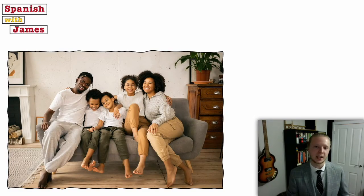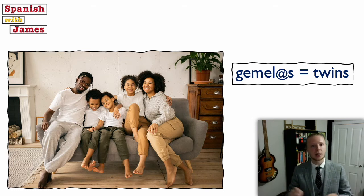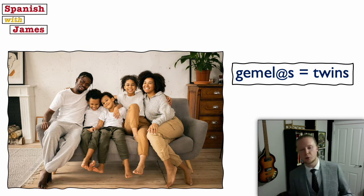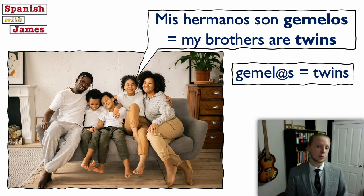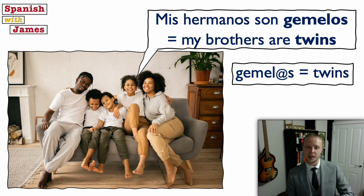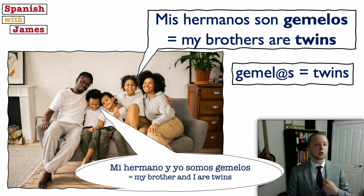In this picture we've got a couple of twins. To say twins: if it's two boy twins it would be gemelos, and if it's girl twins it would be gemelas. Using the at sign, I'd read that as gemelos y gemelas — you tend to read it twice, once with the O ending and once with the A ending. It's not something formal; it's more used on social media and text messages to be inclusive. If this girl were to say 'my brothers are twins', she'd say mis hermanos son gemelos. And this guy would say mi hermano y yo somos gemelos — my brother and I, we are twins.